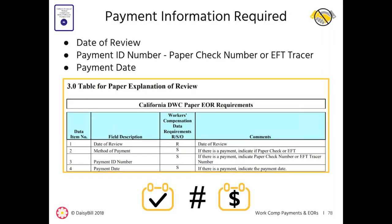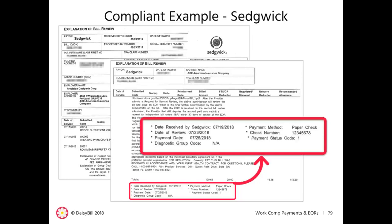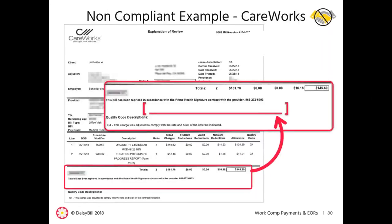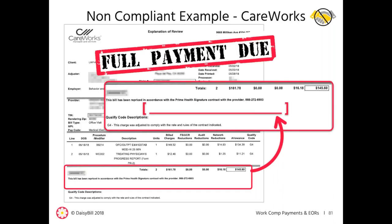First, the date of review is required. Additionally, if a payment is made, the EOR must include the payment information — either the paper check number or EFT tracer and the payment date. In this compliant EOR example from Sedgwick, the EOR includes the required payment details, including the method of payment, the payment ID number, and the payment date. In this non-compliant EOR, there's reimbursement for $145.60 but no payment details such as the payment method or ID. If a lien were filed, the provider would assert breach of duty per the rules of the administrative director and demand full payment of the billed amount.